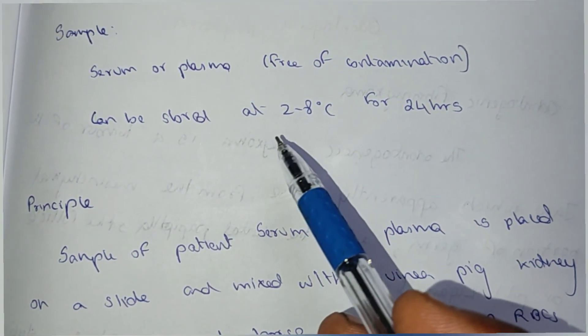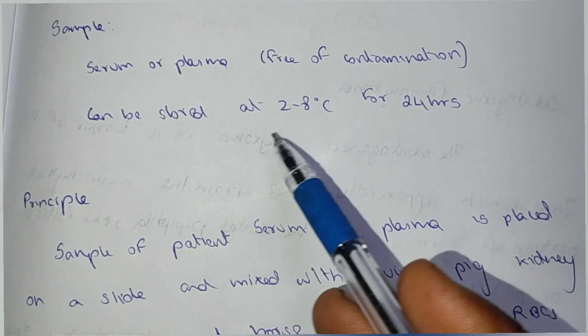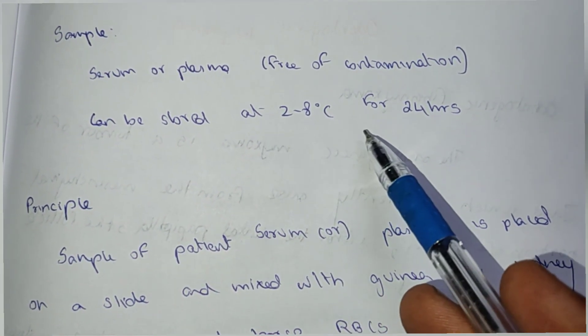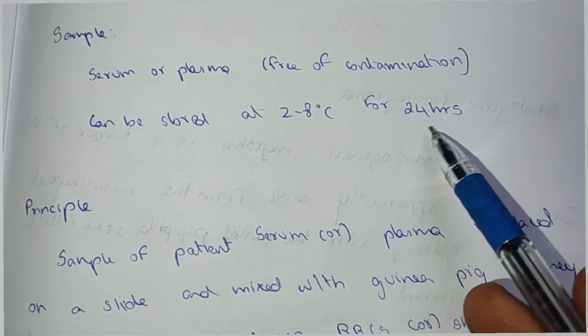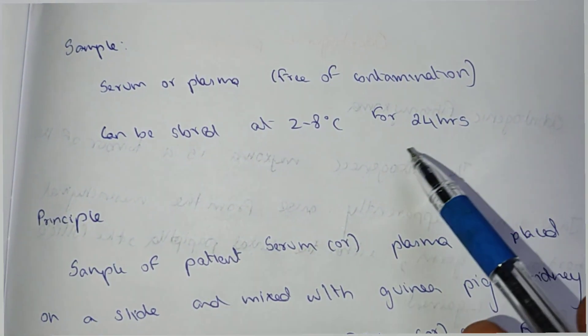The sample used is serum or plasma, collected from the patient, and can be stored at two to eight degrees Celsius for 24 hours.